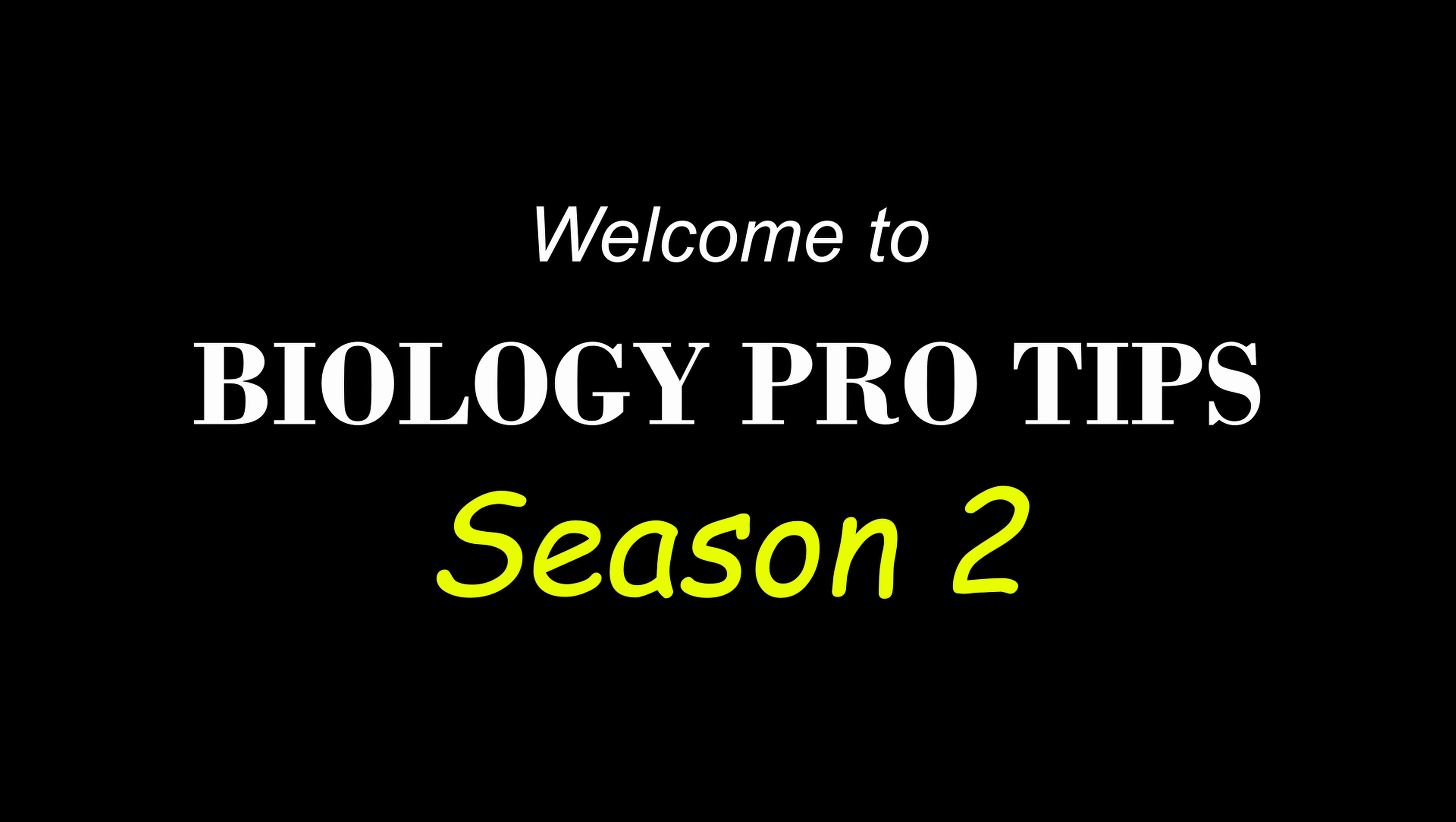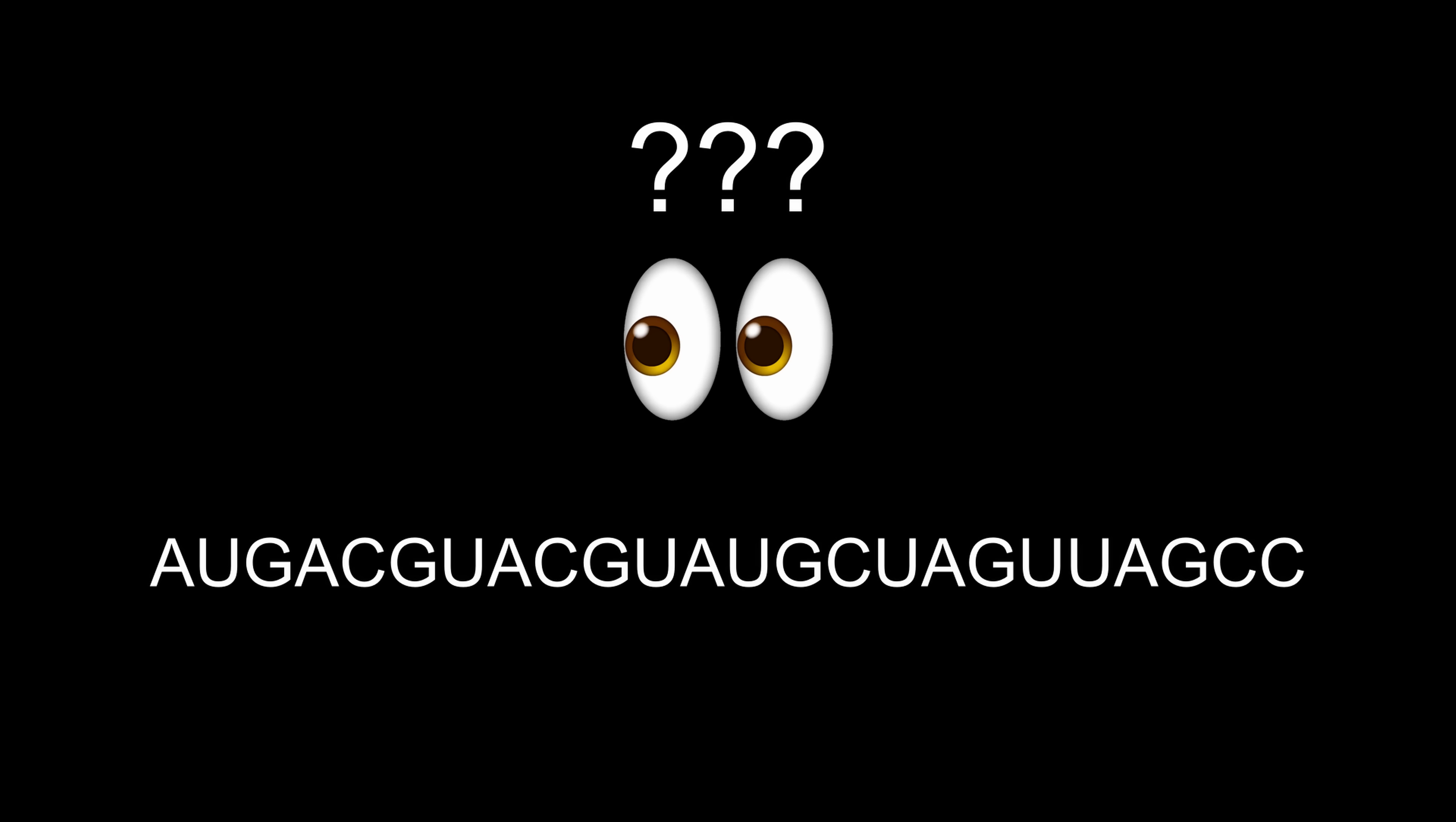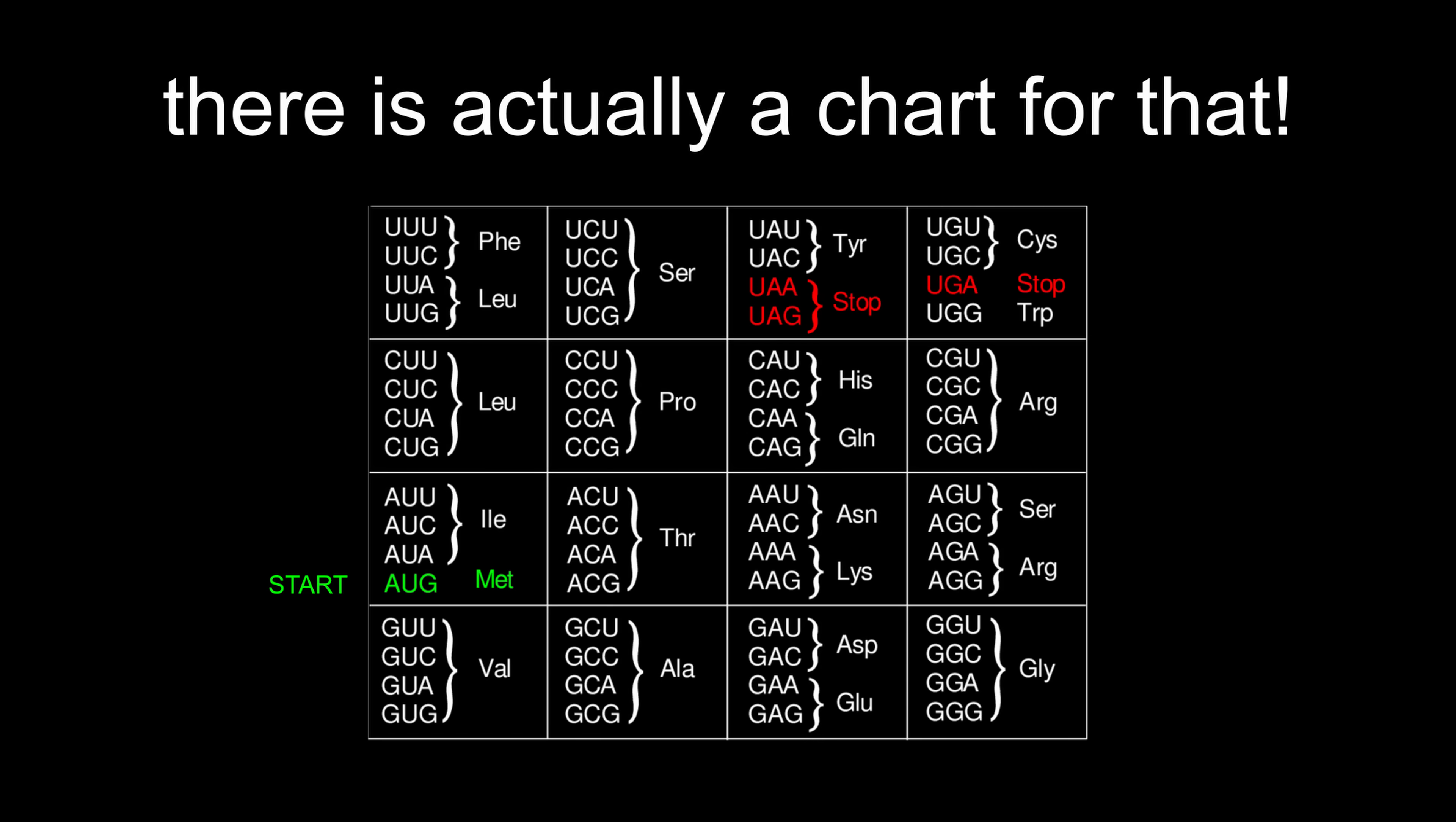Okay, let's recap. A gene is copied onto mRNA, which is then used to build proteins by assembling a chain of amino acids, aka transcription and translation. Welcome to Biology Pro Tips Season 2. If you want to decode a sequence of RNA, there is actually a chart for that. Yeah, that's all. Have a great day.